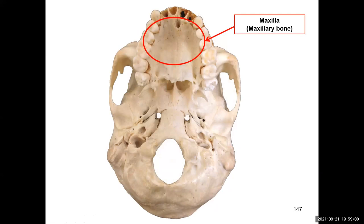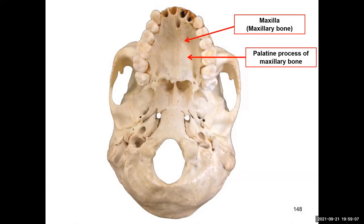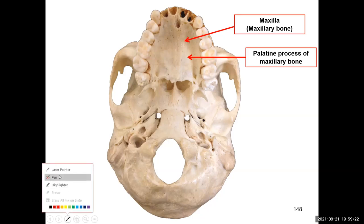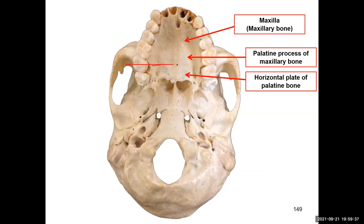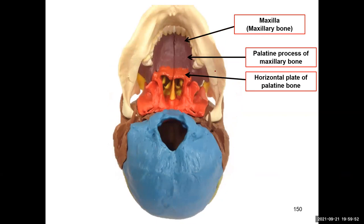The anterior two-thirds of the hard palate is made up of the maxilla, specifically called the palatine process of the maxilla. You can see the suture line between the palatine bone and the maxilla. Below that suture line is the horizontal plate of the palatine bone; above it is the palatine process of the maxillary bone, visible on the colored skull.